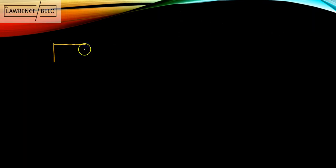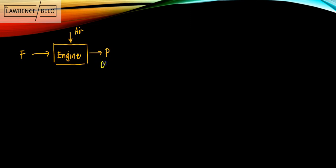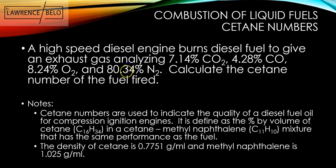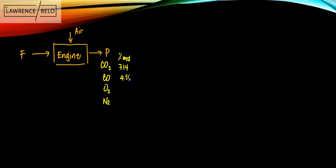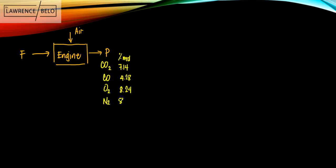So in this case, let's just say this is the engine. The fuel and then there's air, and the product gases. So we're given that the stack gases has the analysis of CO2, CO, O2, and N2. So CO2 7.14, CO 4.28, O2 8.24, and nitrogen 80.34. So that means the dry stack gases here does not include water. So this is in percentage by moles. We can see here that this sums up to 100. That means it's complete.